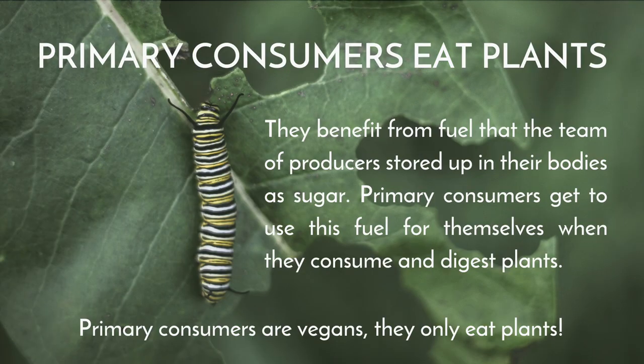Primary consumers eat plants. They benefit from the fuel that the team of producers stored up in their bodies as sugar. Primary consumers get to use this fuel for themselves when they consume and digest plants. Primary consumers include rabbits, caterpillars, aphids, and squirrels. Can you think of any other primary consumers that might be a part of the garden ecosystem?